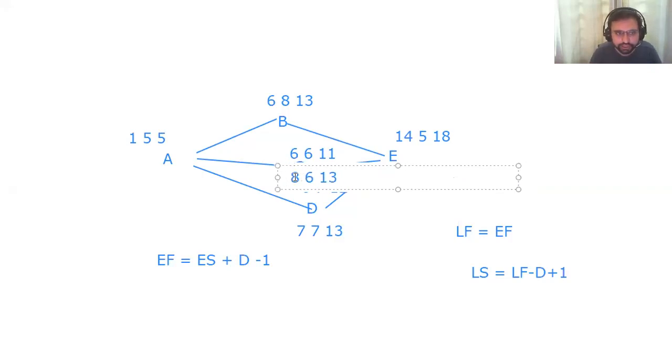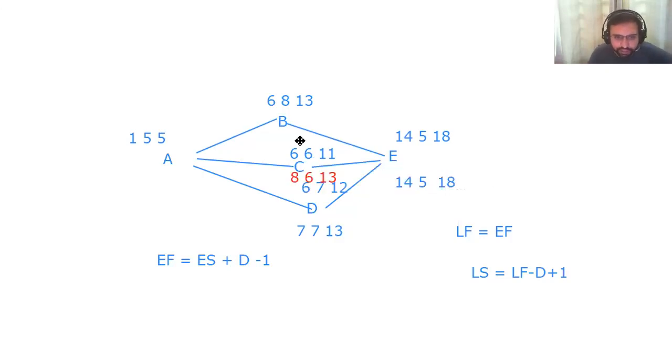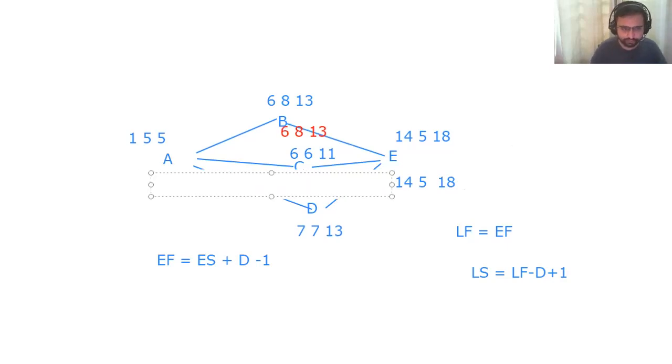Then for the B activity, we also have 13. And then we have 8, 8 minus 13, 5. We have 6. From this, the smallest will go to the A. So 6 is the smallest. So it will have 5. And then duration is 5. We will have 1.